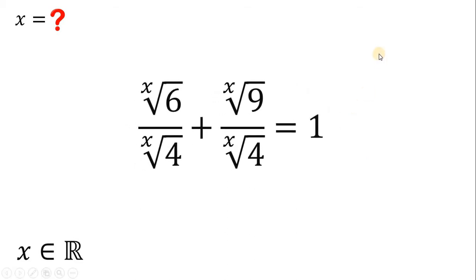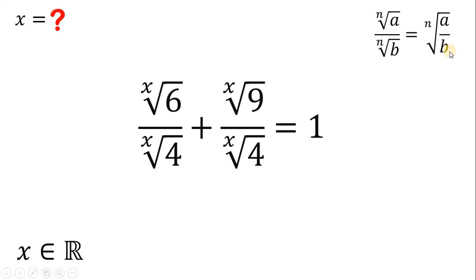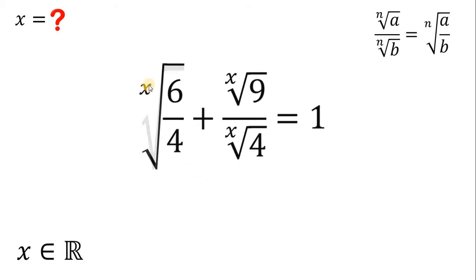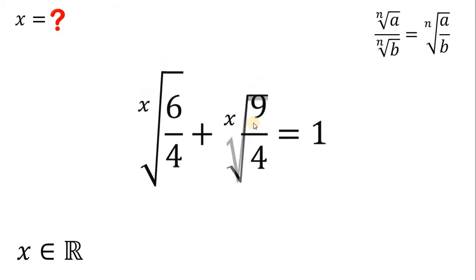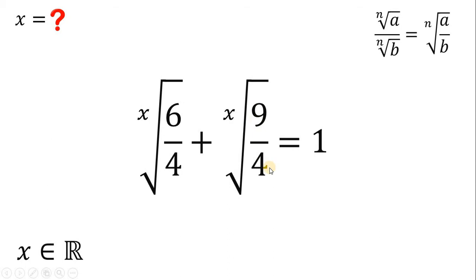Now, let's take note of this law of radicals. If we have n root of a over n root of b, it is equivalent to n root of a over b. Therefore, this x root of 6 over x root of 4 can be written as x root of 6 over 4. Also, this x root of 9 over x root of 4 can be written as x root of 9 over 4.